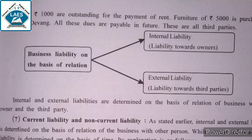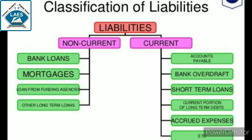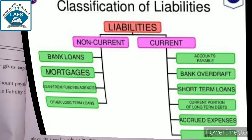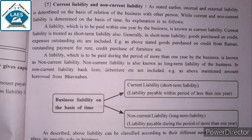Internal and external liabilities are determined on the basis of relation of business with the owner and third party. If amount is payable to the owner, it is internal liability. If amount is payable to a third party, it is external liability. While current and non-current liability is determined on the basis of time.